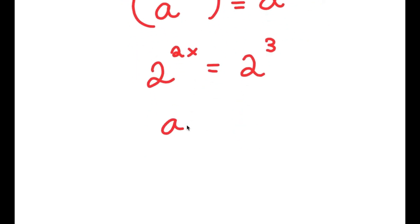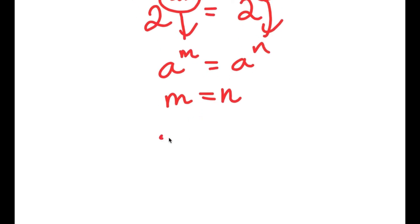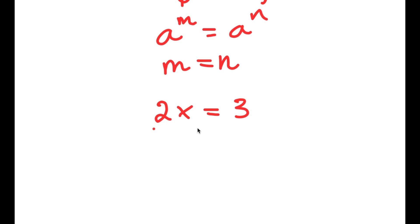And now, if I have something in the form a to the power of m equals a to the power of n, this means that m equals n. Meaning in this case, 2x equals 3. So I have 2x equals 3. This is a simple equation — all I have to do is divide both sides by 2, giving x equals 3 over 2.